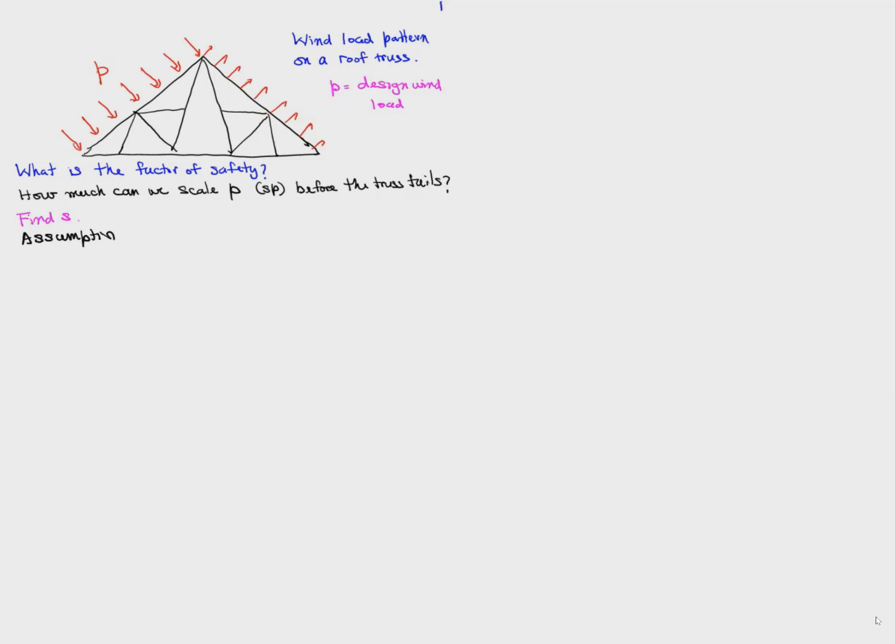So there are some assumptions we make. First, every member has a certain capacity Fy. Each member has a different capacity, and the symbol Y stands for yield. And when this capacity is reached, the member deforms indefinitely at this level of force.